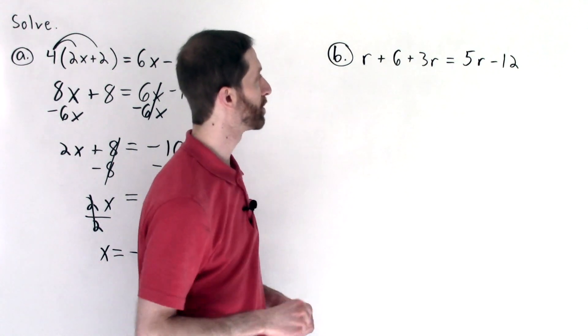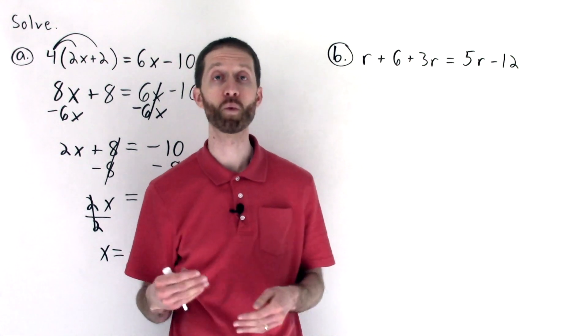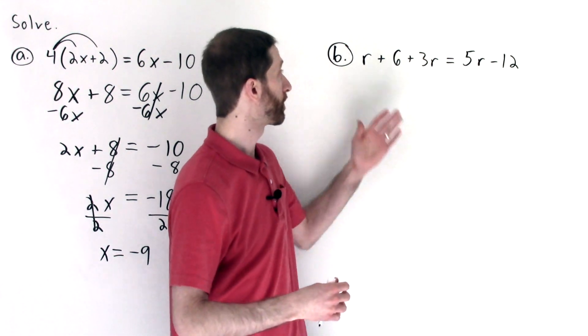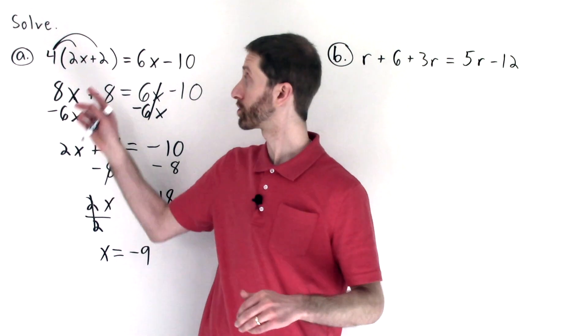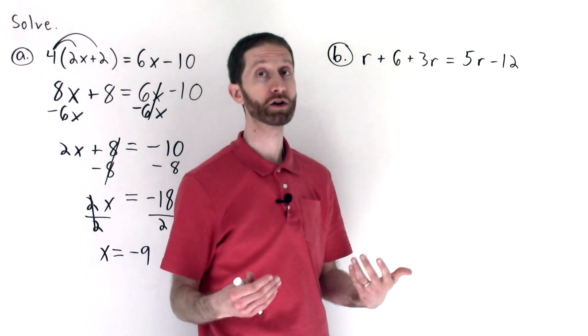Let's take a look at letter b. Letter b falls under the same category of needing to simplify one or both sides of an equation first before being able to isolate variables. On the left hand side, much like the distributive property over here, we see that we have some simplification we can do first. So let's do that.